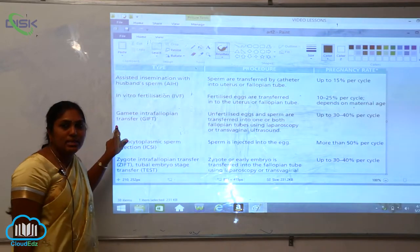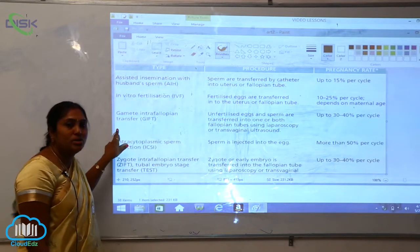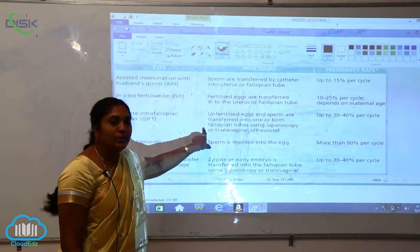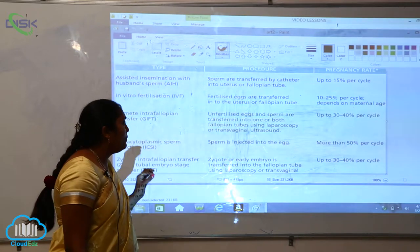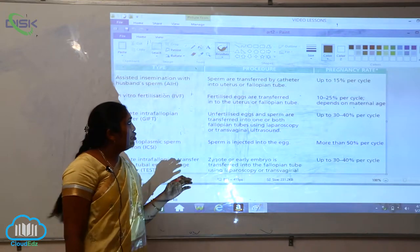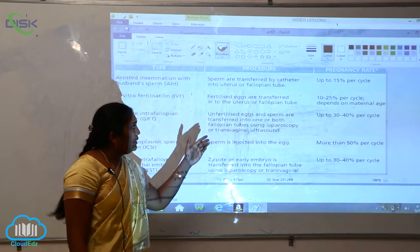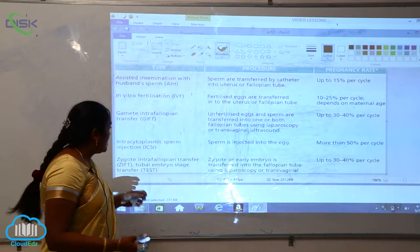The third one is GIFT, gamete intra-fallopian transfer. Here unfertilized eggs and sperms are transferred into one or both fallopian tubes using laparoscopic or transvaginal ultrasound. This is the procedure they will adopt for GIFT. The pregnancy rate will be 30 to 40 percent per cycle.